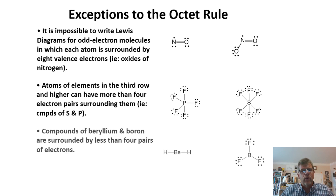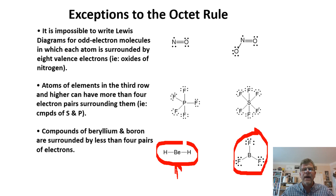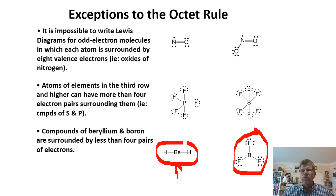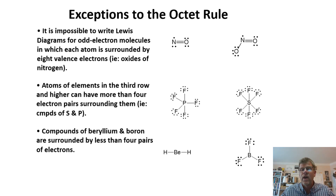The last exception to the octet rule involves compounds of beryllium and boron. Beryllium only has two valence electrons, so it can have at most two covalent bonds — only four electrons, making it electron deficient. Similarly, boron has three valence electrons and can only have three bonds emanating from it, giving it only six electrons total — unable to approach the octet of eight electrons.